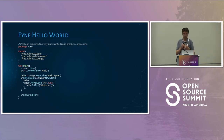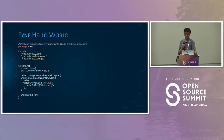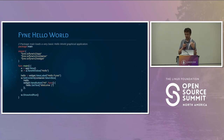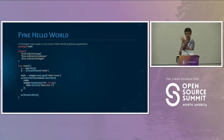Here is a Fyne hello world. You create an application, create a window from it, create a label and put it into a VBox — a vertical box container — which has the label and a button. The button has a function that, when you click it, changes the label to a different text. This is basically how any application will be: a stack of widgets and containers together with functions and callbacks that do the work. At the end, we call ShowAndRun because it needs to block until the window lifecycle is done.